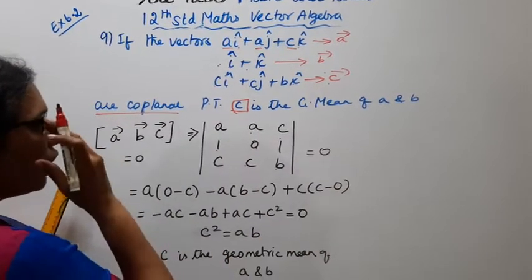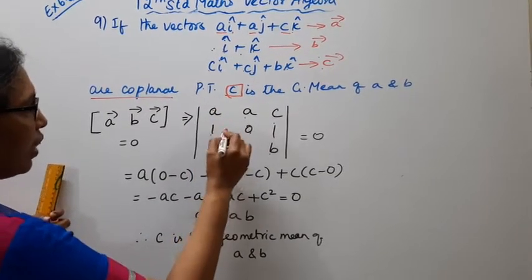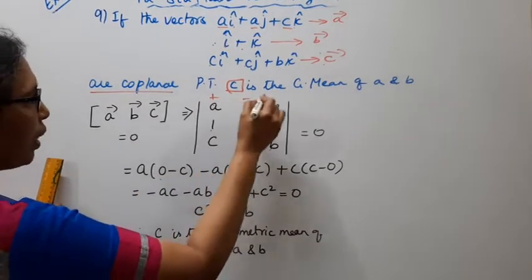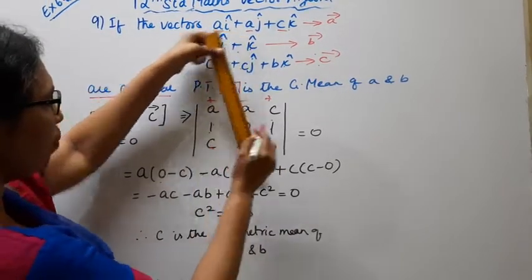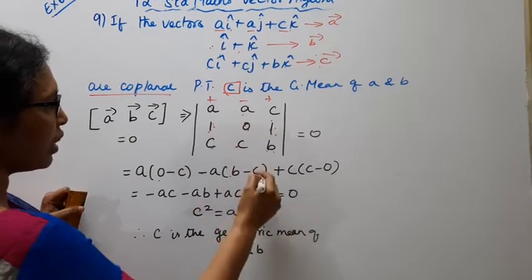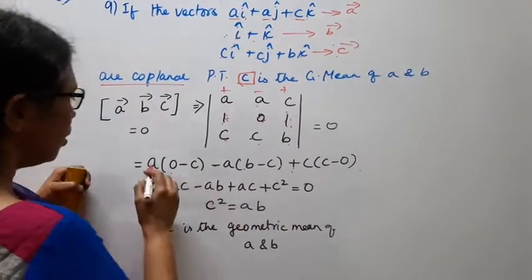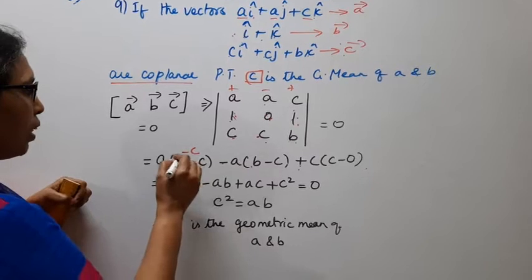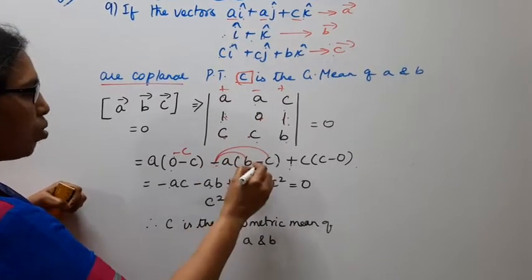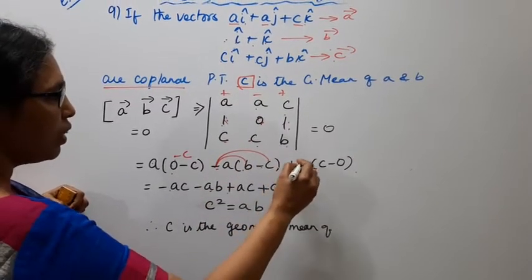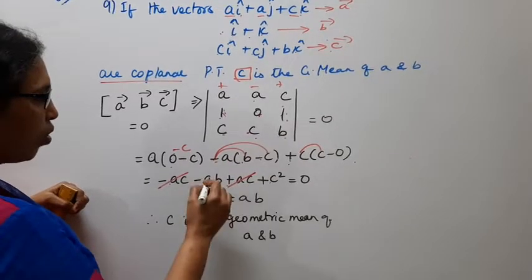That determinant is equal to 0. Expanding: a minus ac minus ac minus ab minus c plus ca plus c squared equals 0. The ac terms cancel, giving c squared equal to ab.